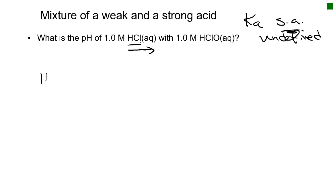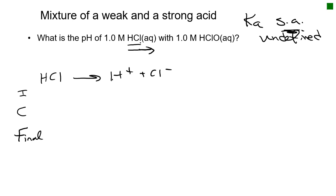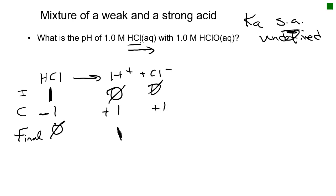That means if we put HCl in water, it makes H⁺ plus Cl⁻. We can't do an ICE chart because it's not an equilibrium — we call it ICF, where F stands for 'final' rather than equilibrium. Starting with 1M HCl and zero products, we lose all HCl because it's a strong acid, ending with 0 HCl and 1M H⁺ and 1M Cl⁻. That's step one.